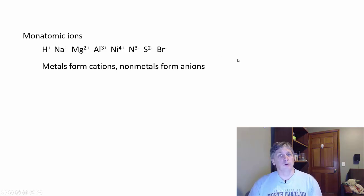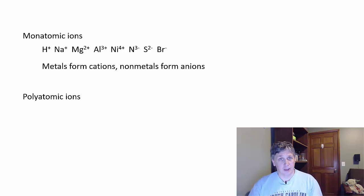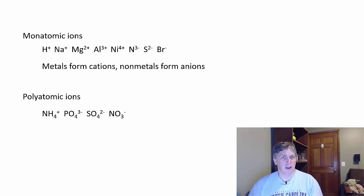Molecules can also pick up and lose electrons through various types of reactions, and we call those polyatomic ions — it's just a molecule that has a net charge. It could be a cation or an anion, though most of the ones we run into in this course are anions, but not all of them.